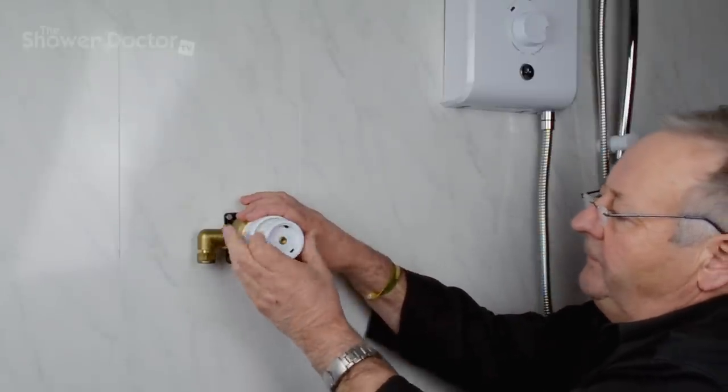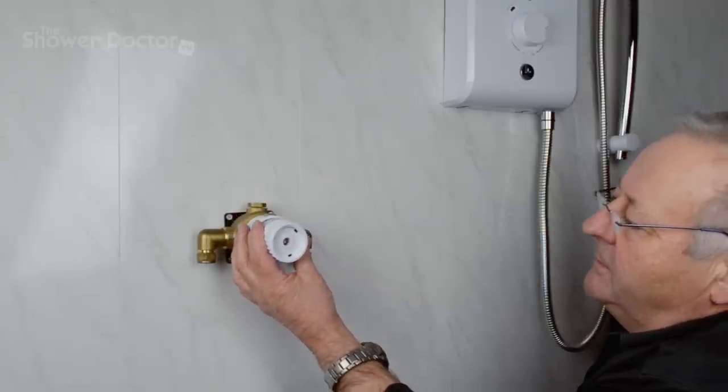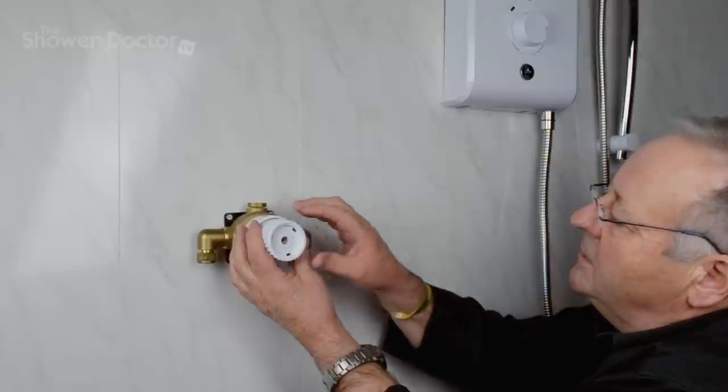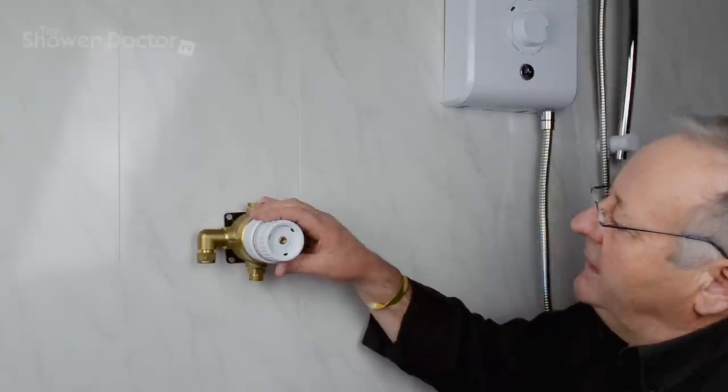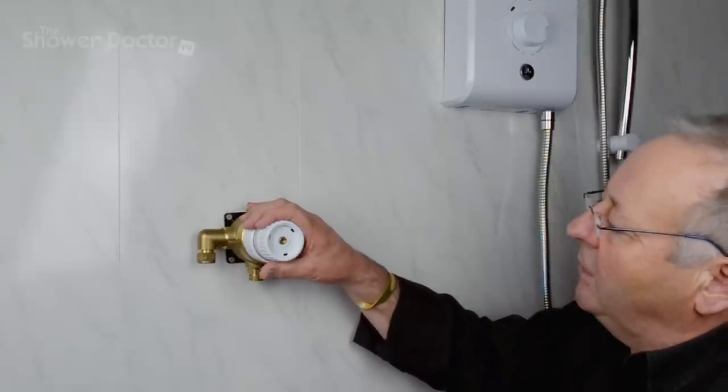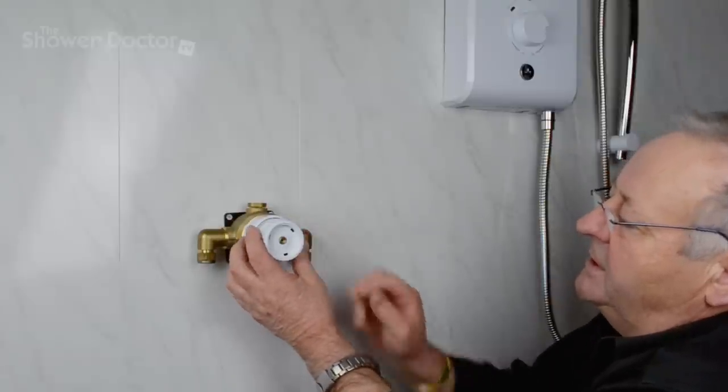Now that came off fairly easily, but some of the older showers can be the absolute devil to get these knobs off. A little trade secret: what they do is pour a couple kettlefuls of boiling hot water over the knob. That should help to release the knob; it expands the plastic just enough to help it come off.